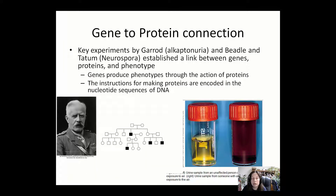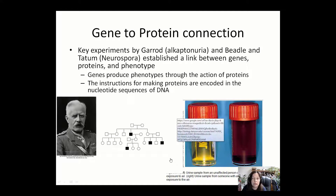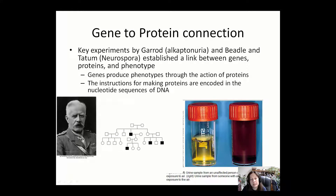How do we know about the connection between genes and proteins? Some clues came from research by Archibald Garrod, with experiments done in the late 19th century from about 1890 to 1910. Another team of researchers, Beadle and Tatum, did experiments on bread mold called Neurospora. Both studies established the link between genes, proteins, and phenotype.